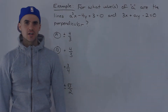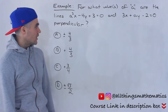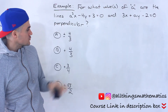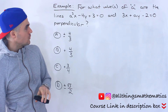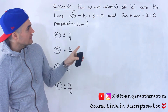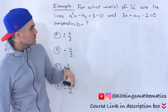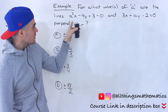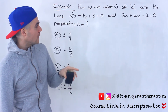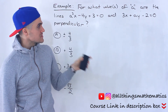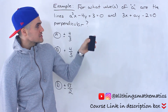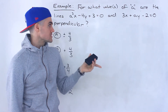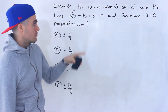What's up everyone? Patrick here. Welcome back. Moving on to the next question. This is a multiple choice question. For what value or values of A are the lines A squared X minus 4Y plus 3 equals 0 and 3X plus AY minus 2 equals 0 perpendicular?